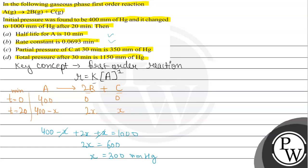Now let us move to C. C statement says that the partial pressure of C at 30 minutes will be 350 mm of Hg. So basically we have partial pressure of C at 30 minutes. So let us see, we have first order which is our main reaction that we will use.